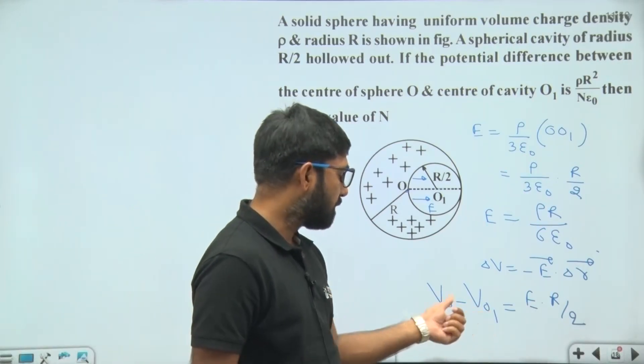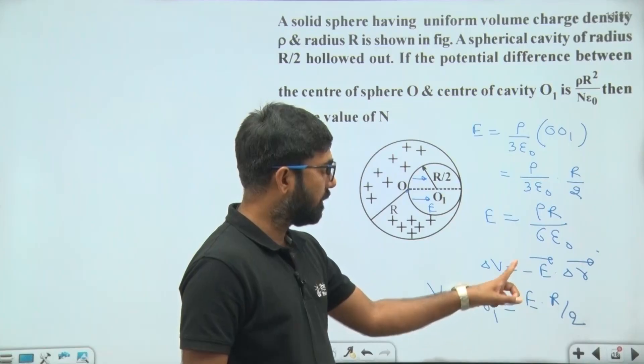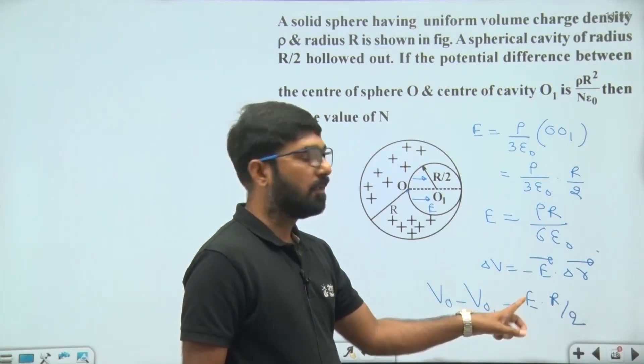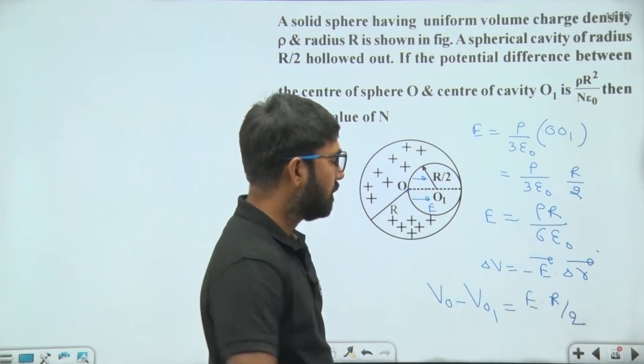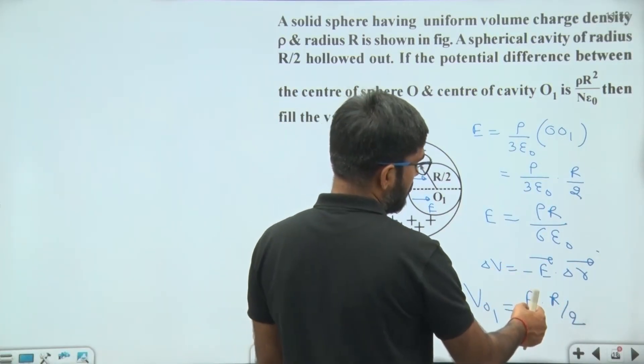If we write V O1 minus V O then we will put negative sign here. If we write V O minus V O1 then remove the negative sign from here. This value will be equal to E into R by 2.